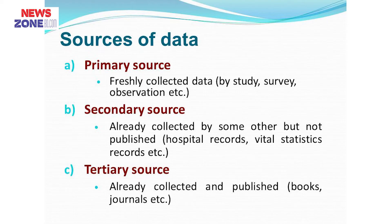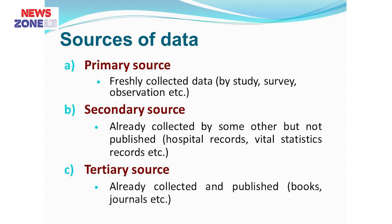Now let's see the sources of data. There are three sources: primary, secondary, and tertiary. Primary source is freshly collected data — we can collect data by study, survey, surveillance, or observation. Secondary data are already collected data used from another person, such as from hospital records or statistical records. Tertiary data are data that are already collected and published in books or journals.